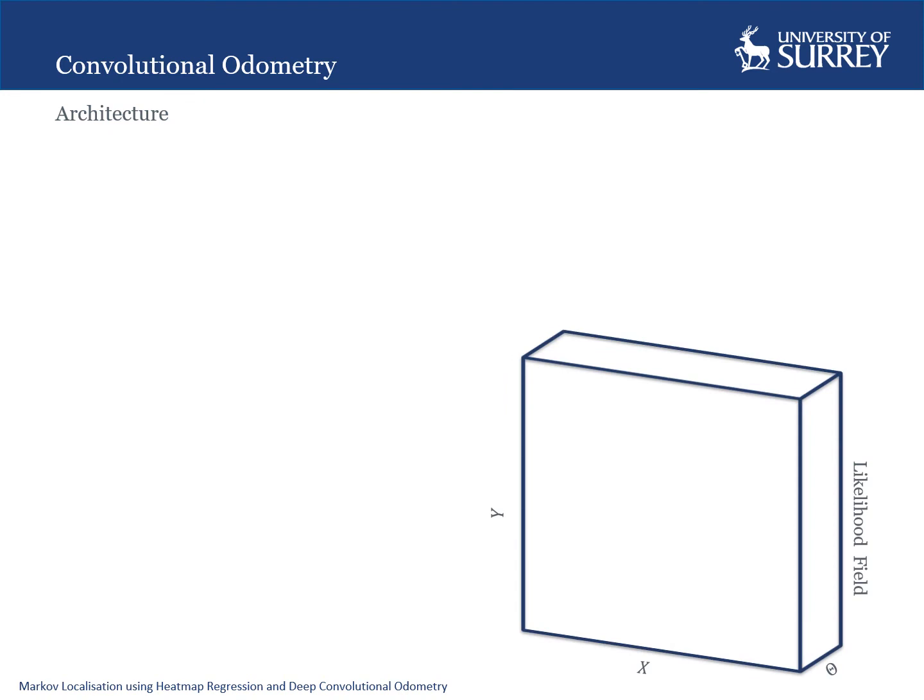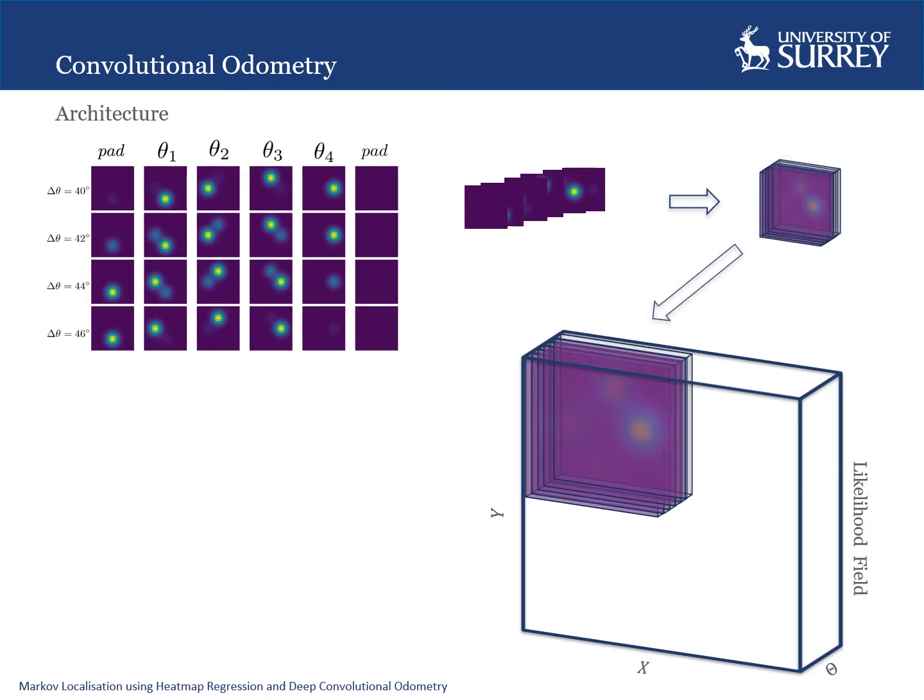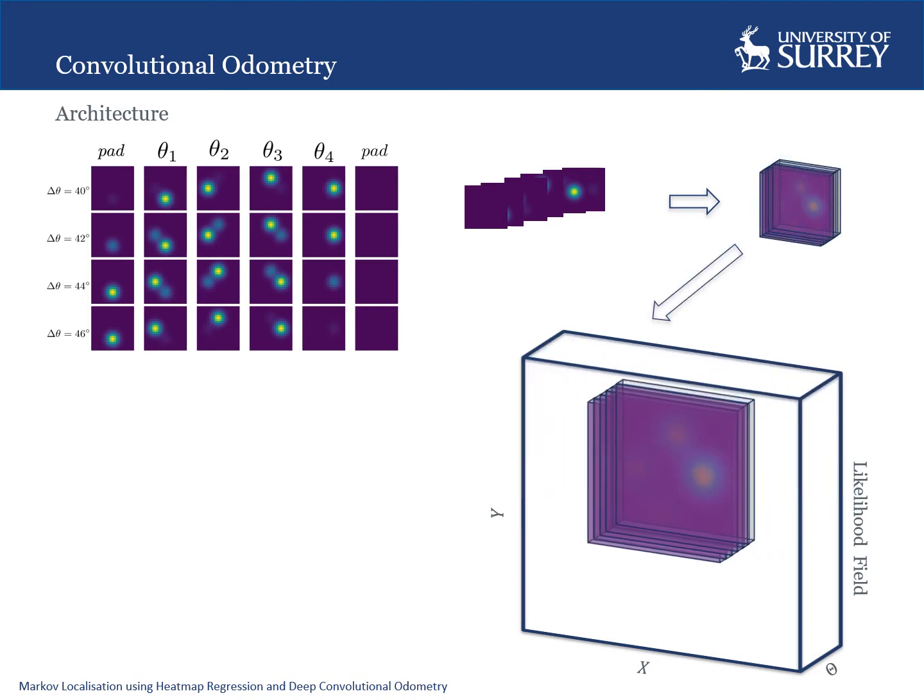In order to use odometry to propagate these uncertainties, we first estimate displacements for each theta channel. We then map these to a series of 2D kernels. Instead of applying them one by one as a series of convolutions, we stack them into a 3D kernel. Convolutional odometry can then be performed as a single 3D convolution.